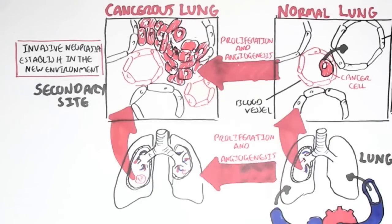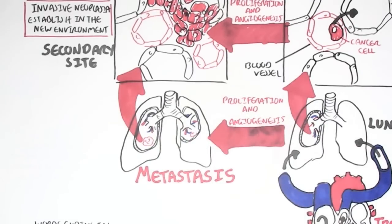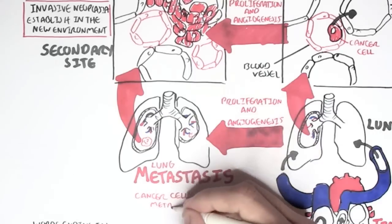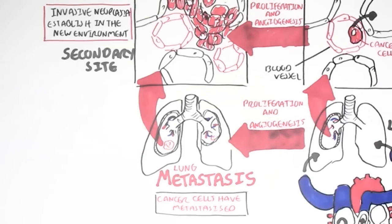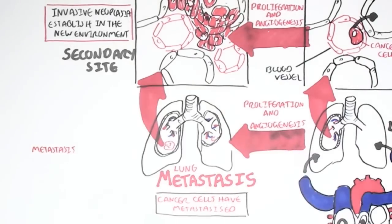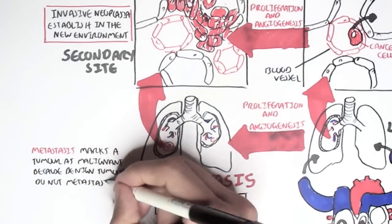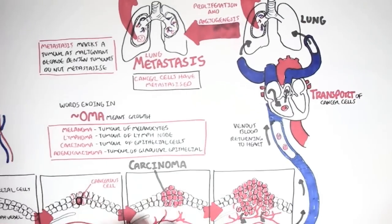When cancer has spread from the breast to the lungs, this process is known as metastasis. Because the cancer has spread to the lungs, we call this lung metastasis, and we say the cancer cells have metastasized — have spread. Metastasis marks a tumor as malignant, because benign tumors are not metastatic; they do not spread and they are not invasive.